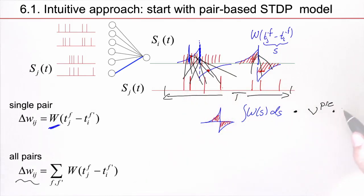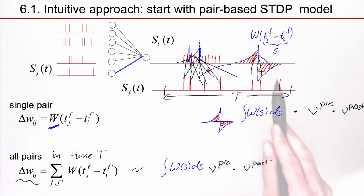So, the change, the total change in a window of time length capital T will be proportional to the rate of presynaptic spikes and the rate of postsynaptic spikes, and this integral over the window, the surface under the window. And then, if I increase T, then overall I will have more and more spikes, so there should be another factor, capital T.